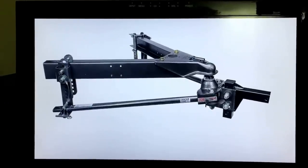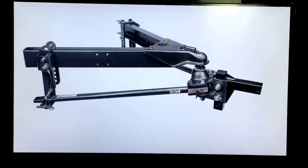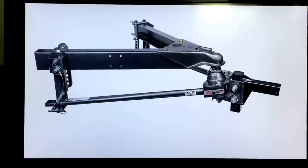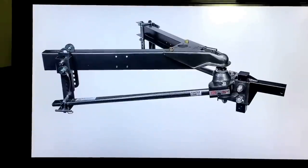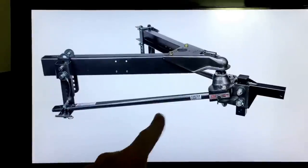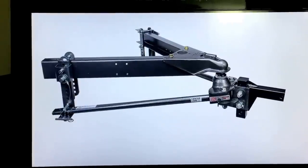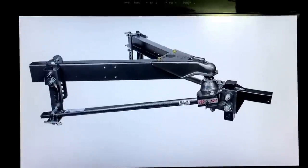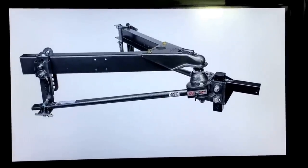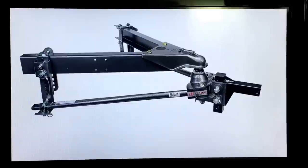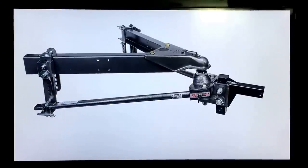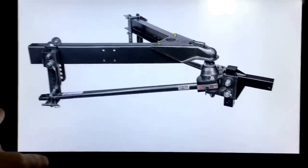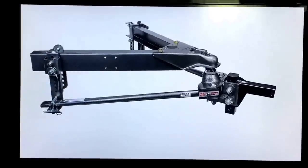So the thing you also have to look out for is people are going to be inclined to look at the dry weight of the trailer they want to purchase. And they're going to want to find a weight distribution set that goes with that. When in reality, through a lot of practice, what we've found is you actually want to look at a weight distribution set that more closely lines up with your GVW, your max dry weight plus max cargo weight. Because that better reflects, and don't get me wrong, the chances of you actually loading something up to reach your GVW are slim to none. And slim just left the building.